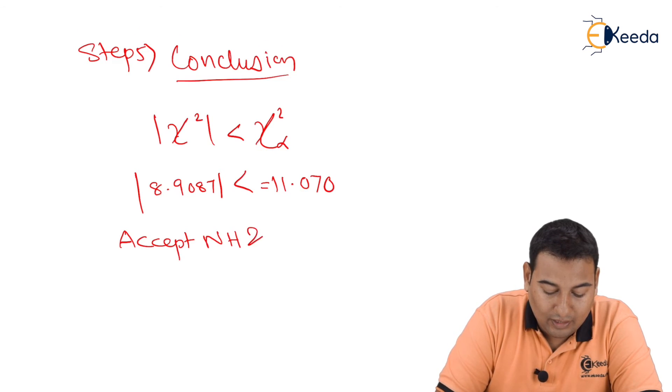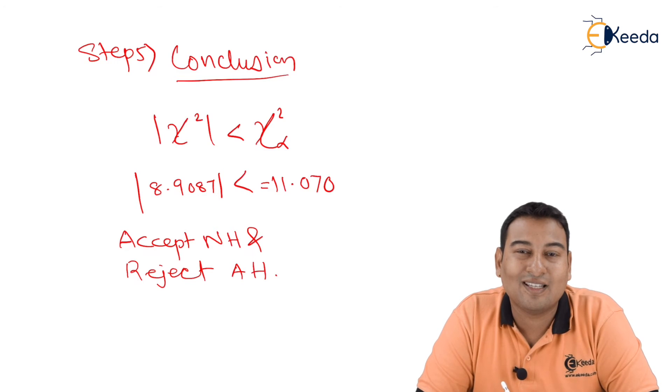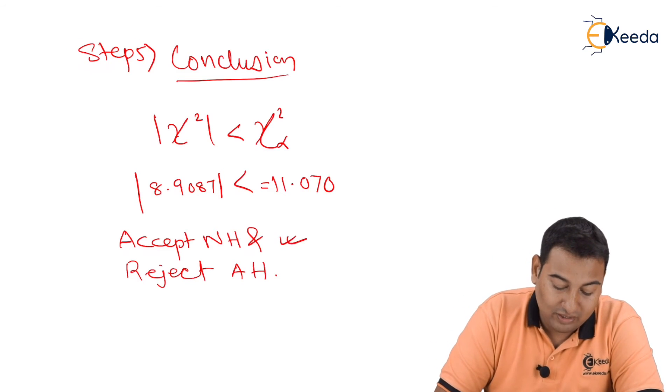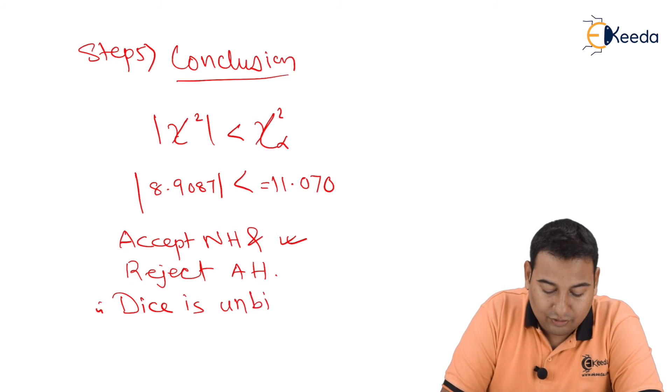Accept NH and reject AH. So what does this mean with respect to our problem? What was our NH? Null hypothesis is the die is unbiased, so we are accepting it. What's the conclusion? Therefore the die is unbiased.